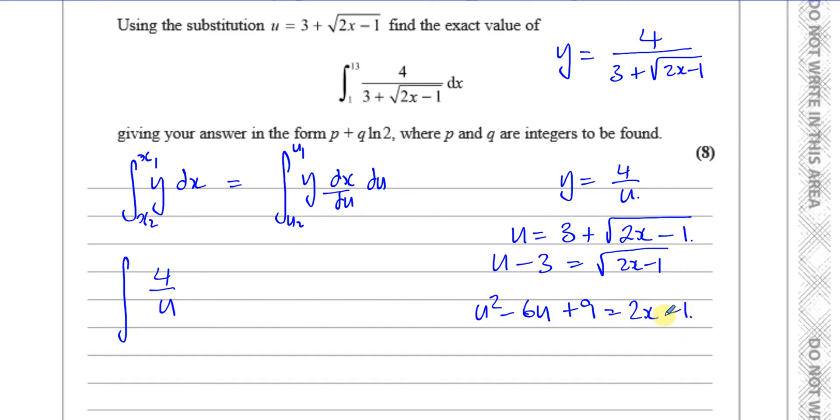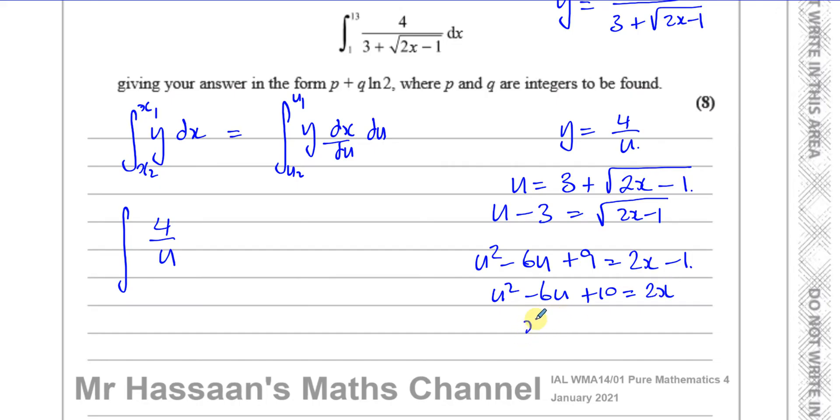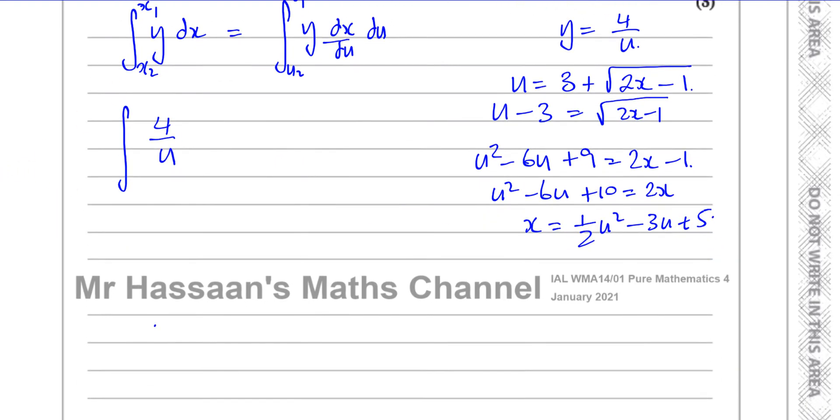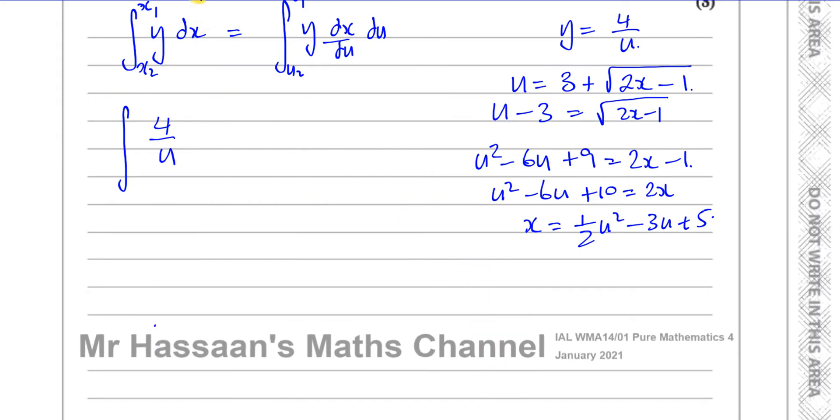Now if I make my x the subject, I have to add one to both sides. So I'll have u squared minus 6u plus 10 equals 2x. And if I now make x the subject by dividing by 2, I'll have x equals 1 half u squared minus 3u plus 5. So I can find dx/du quite easily here. dx/du is going to be 2 times 1 half, which is 1, so that's u minus 3.